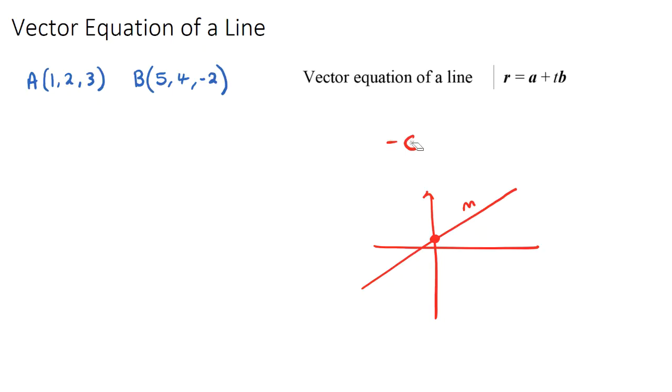So the vector equation of a line, the general formula, which is given in our formula booklet, is this one here, where r equals a plus tb. And it's very similar to y equals, I'm going to put the c first, c plus mx.